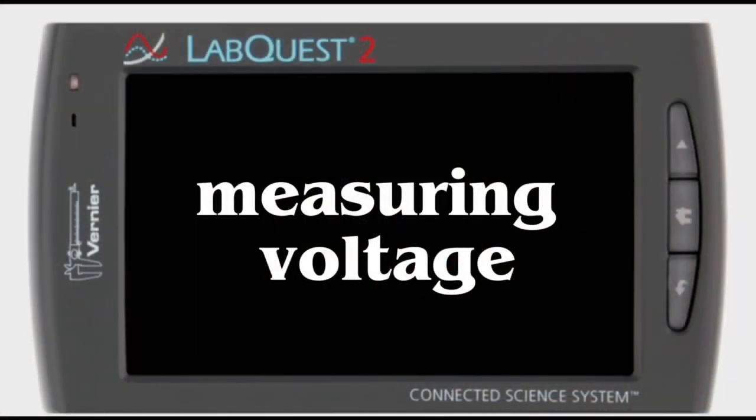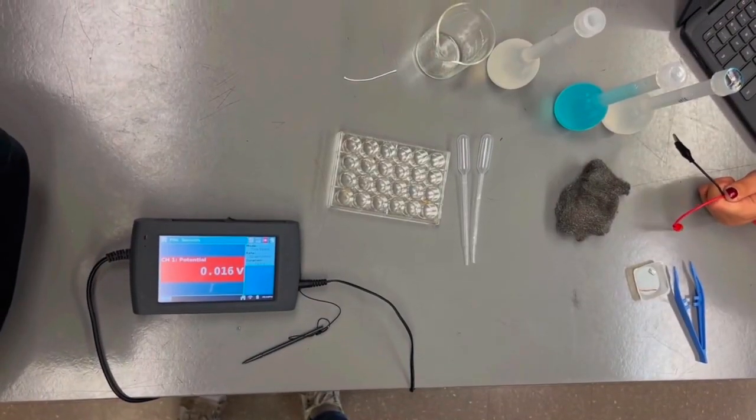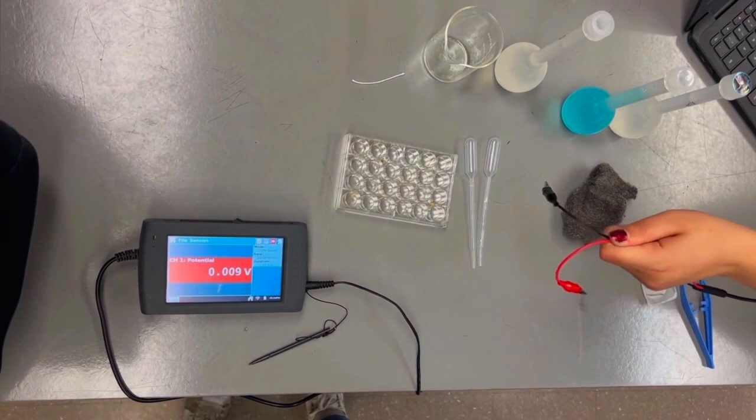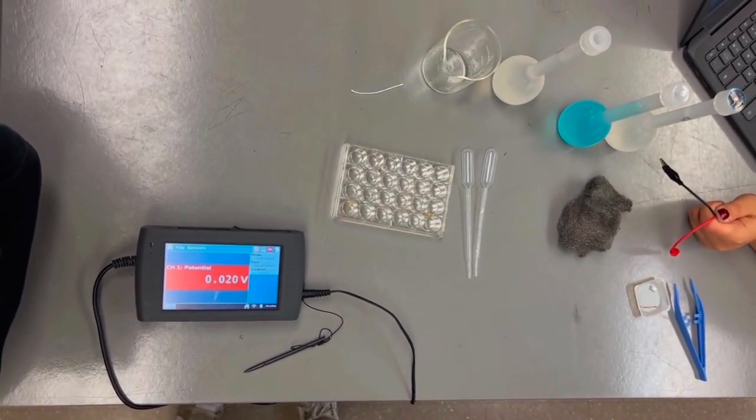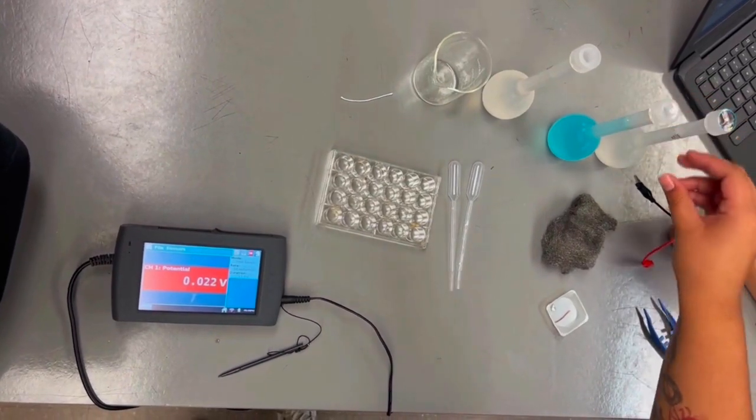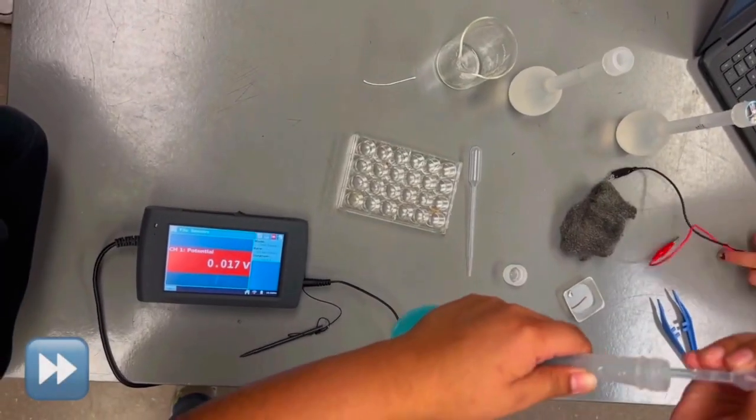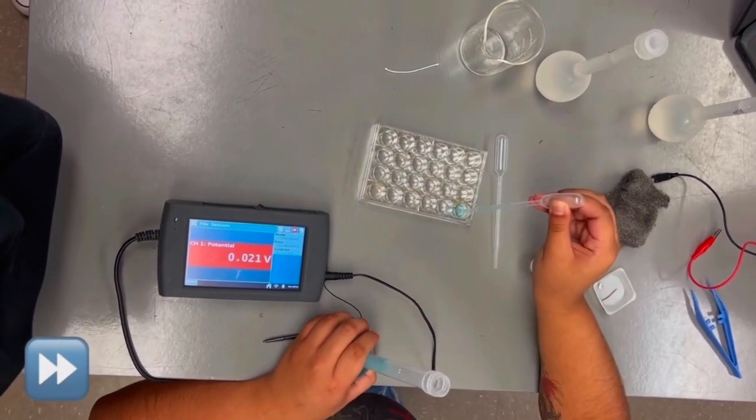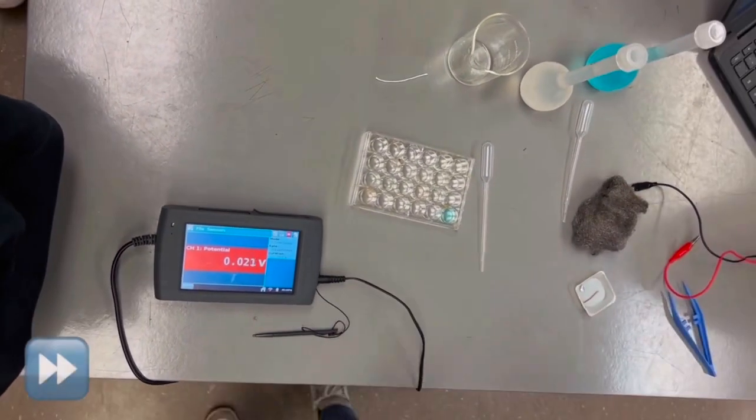The lab consists of three parts in which you will measure voltage using a voltage probe and lab quest. In this example, we will use copper and zinc electrodes along with their corresponding solutions, zinc nitrate and copper nitrate. Using barrel pipettes, transfer a few drops of each solution into adjacent wells on the spot plate.